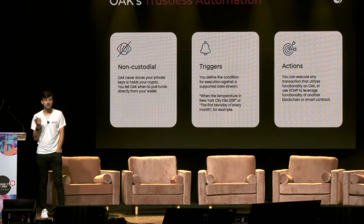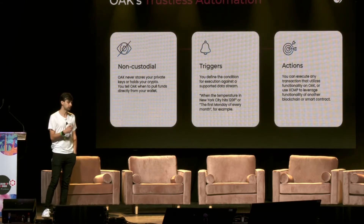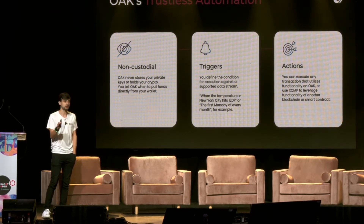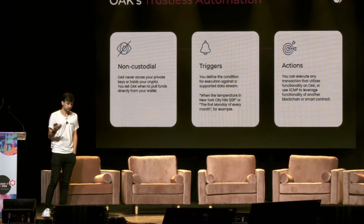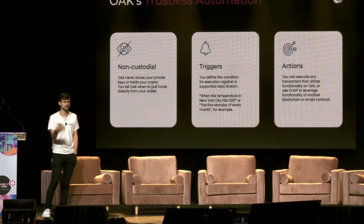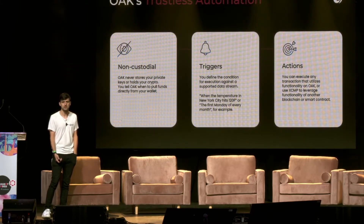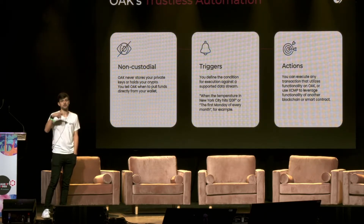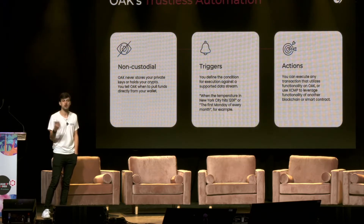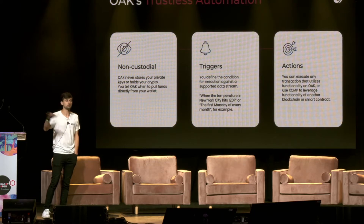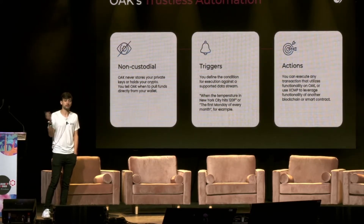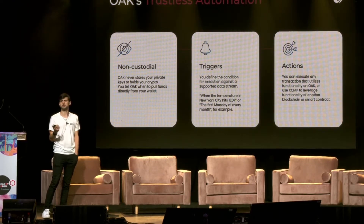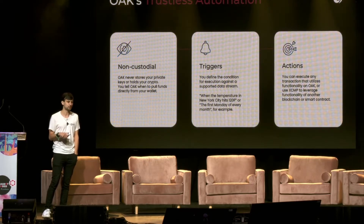So how do we do that? There are three concepts I want to make sure you understand. The first is that we're non-custodial. Once you sign that initial transaction, I don't need your keys, I don't need your tokens. For example, if you want to send someone money on the last Friday of every month at 4 PM, you could schedule a transfer with Oak to do that. Last Friday of the month rolls around, it's 4 PM, we just grab those tokens from your wallet and send them right over to that recipient. We don't need those tokens ahead of time — which is kind of nice if you're doing 12 easy payments of $9.95.